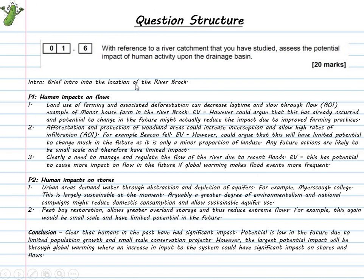This is a quite detailed plan. I've decided to split my paragraphs up into how humans impact flows and how humans impact stores. Within the first section, I'll talk about farming and land use change. I'm initially going to talk about things like farming linking to deforestation, how that might affect lag time and through flow. I could evaluate this by saying this has already happened and largely land use changes won't change too much into the future, but I could also talk about change in farming practices. So I'm trying to really create a strong discussion within my answer here, trying to give an example of how it might change in one way and however some people could believe it could change in another way.